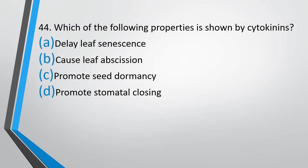Question No. 44: Which of the following properties is shown by cytokinin? Delay leaf senescence, cause leaf abscission, promote seed dormancy, or promote stomatal closing? The correct answer is option A — it delays leaf senescence.